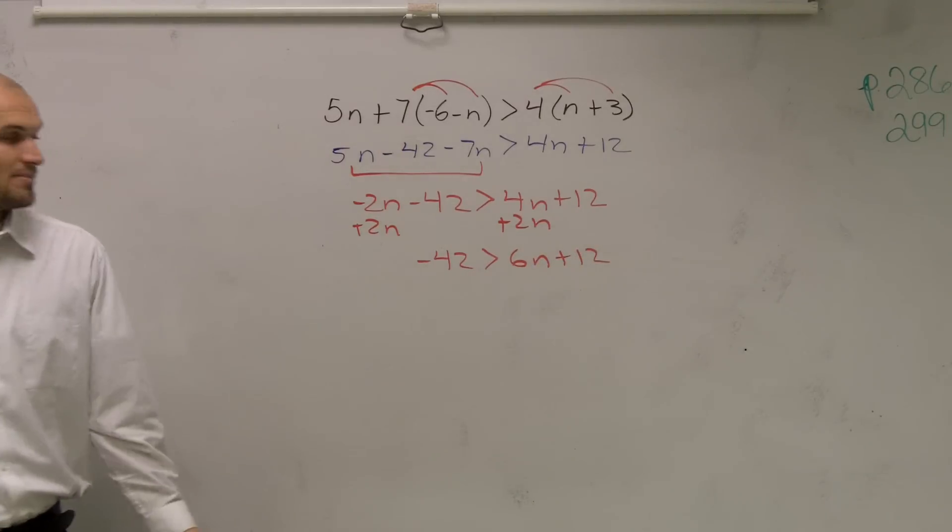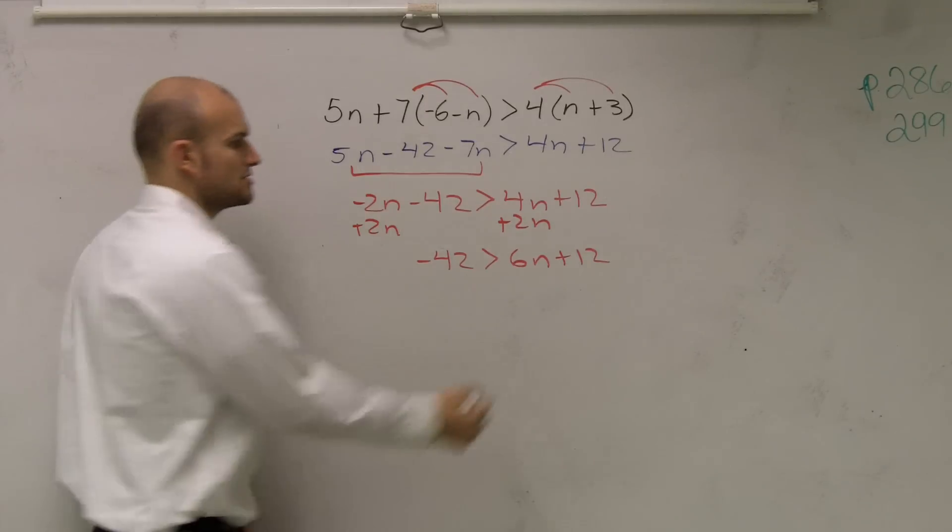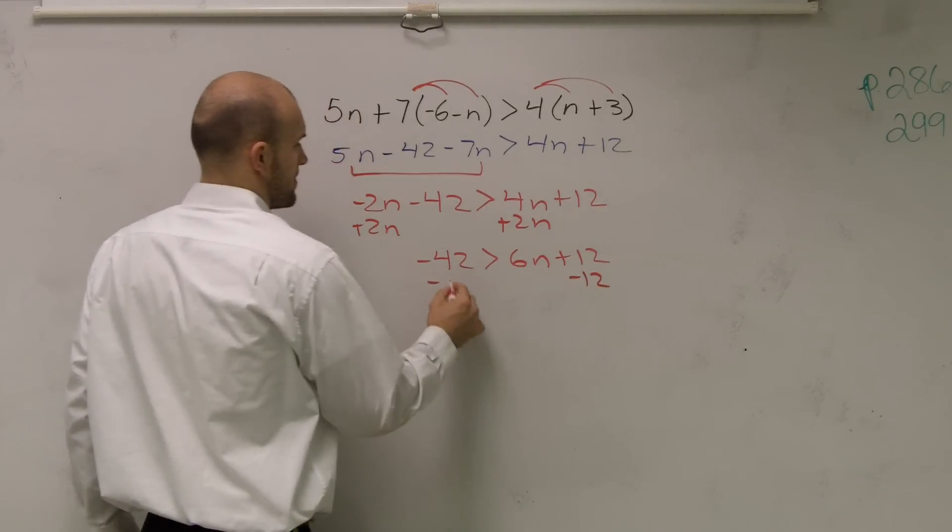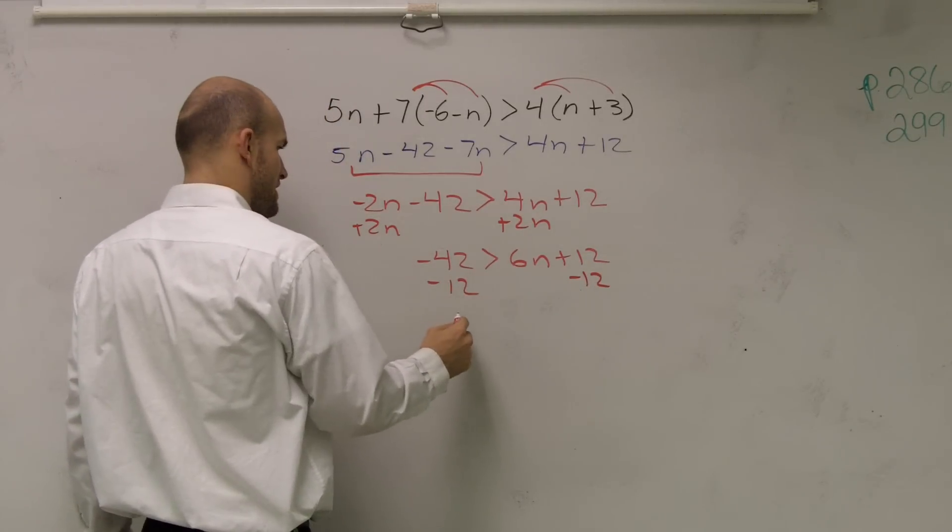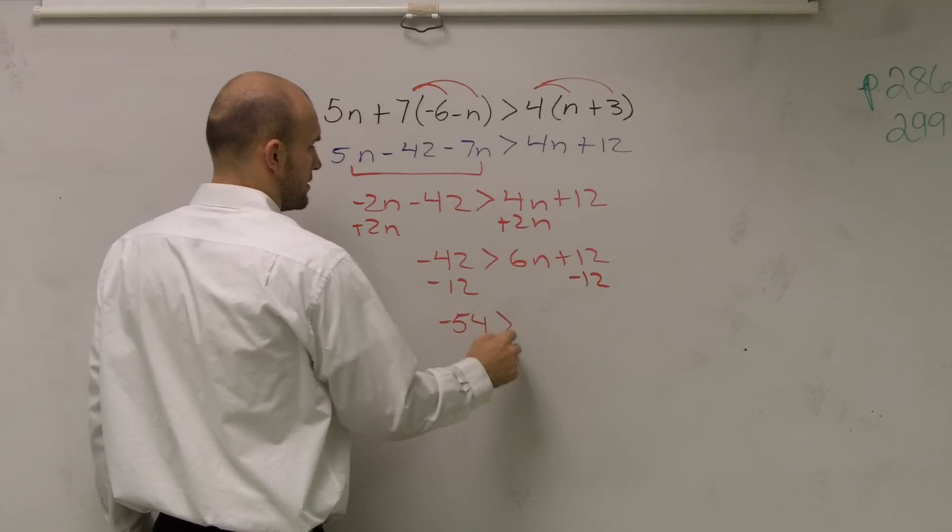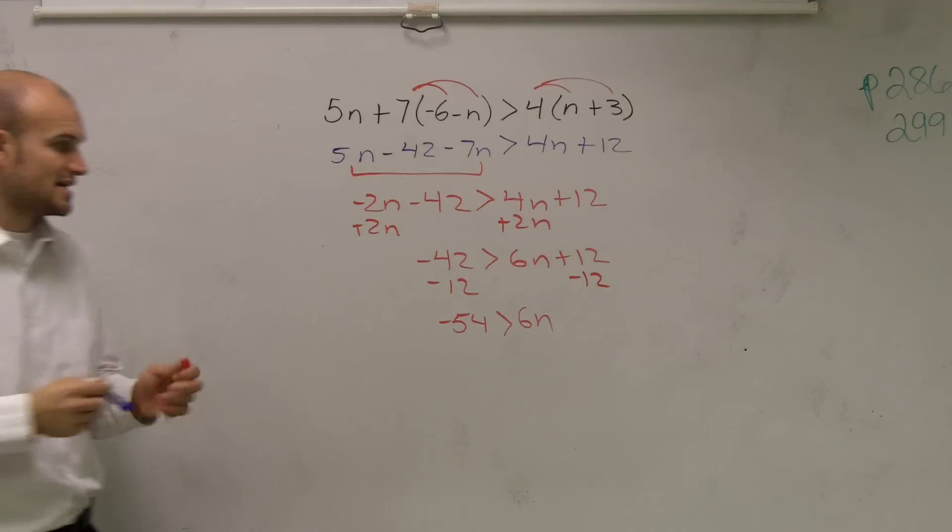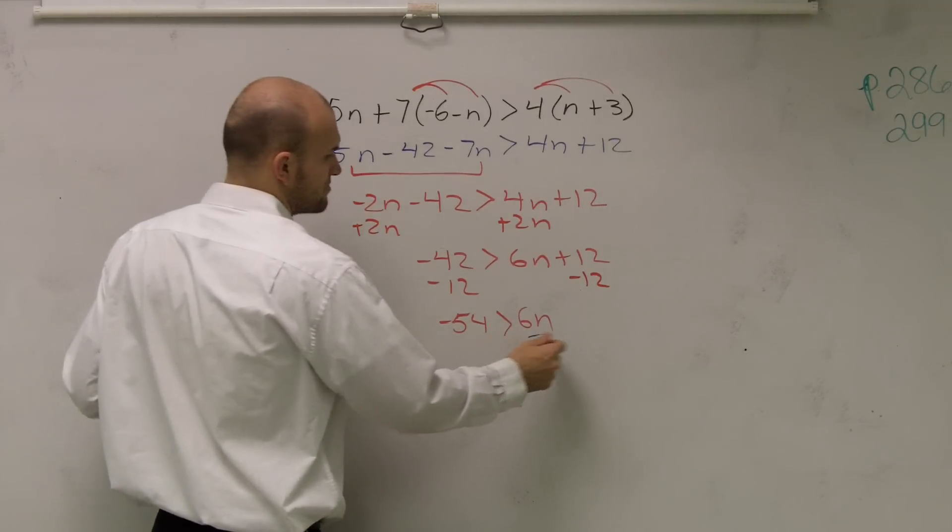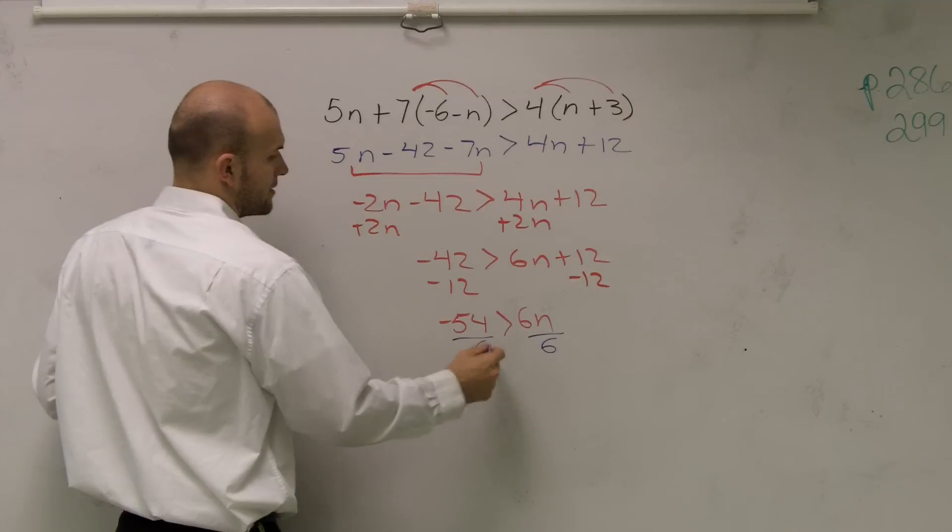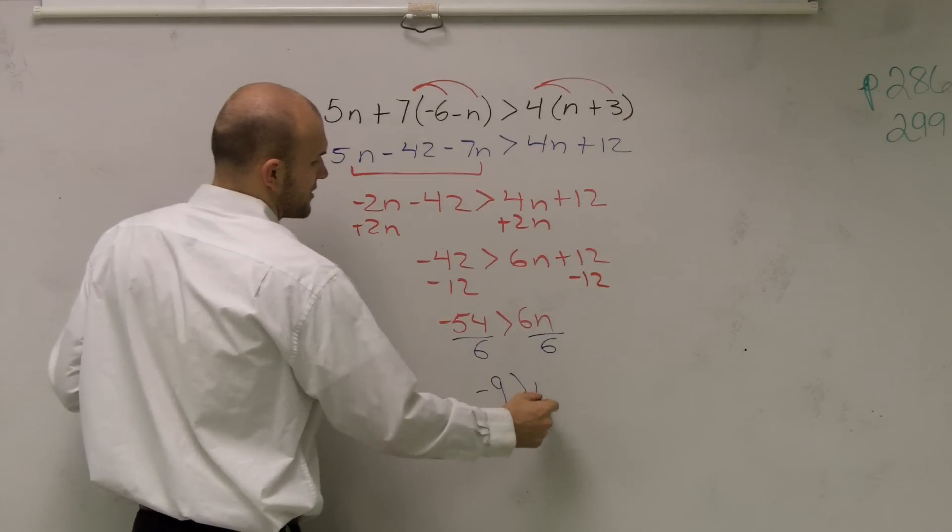Now I need to isolate my variable, so I'll subtract 12. And I have negative 54 is greater than 6n. Now I have to get rid of the 6. I need to divide by 6 since it's multiplied by my variable. And I have negative 9 is greater than n.